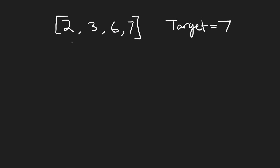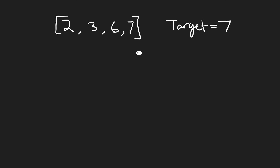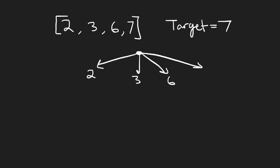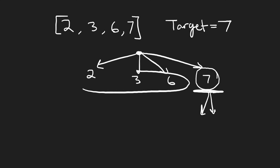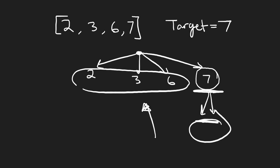The difficult part is eliminating duplicate combinations. If we brute-force with a decision tree — four values, each chosen unlimited times — we'd have four decisions at each step: two, three, six, and seven. Down one path we find seven immediately and stop, since all values are positive and adding more would only exceed the target.